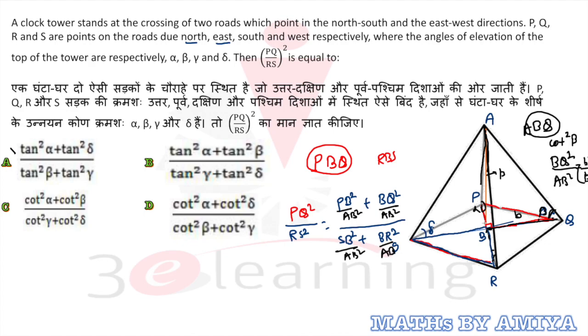PB line, it means this must be cot squared alpha. Cot squared alpha is here. Then we have nothing but BQ line is the cot squared beta. Cot squared beta. So the answer of this question is nothing but cot squared alpha plus cot squared beta upon cot squared gamma plus cot squared delta is the answer of this question.